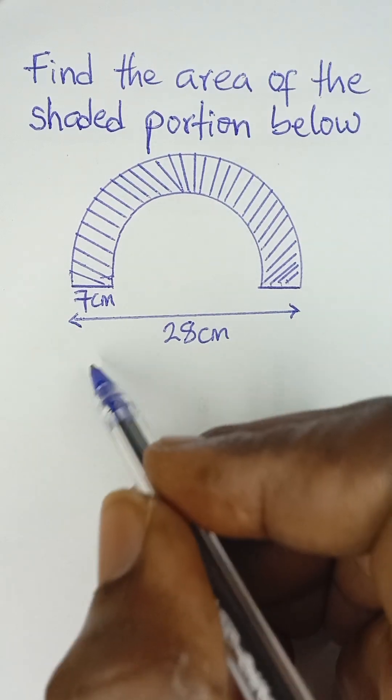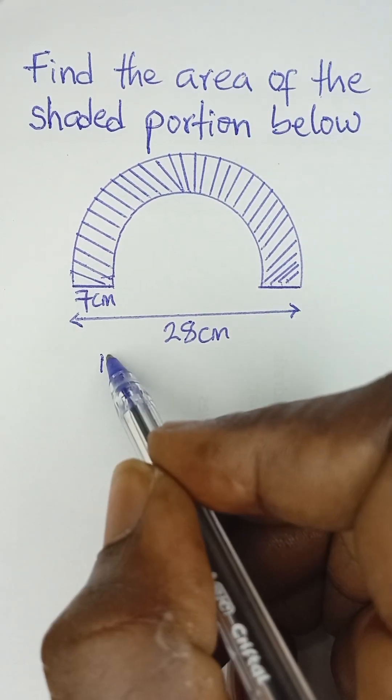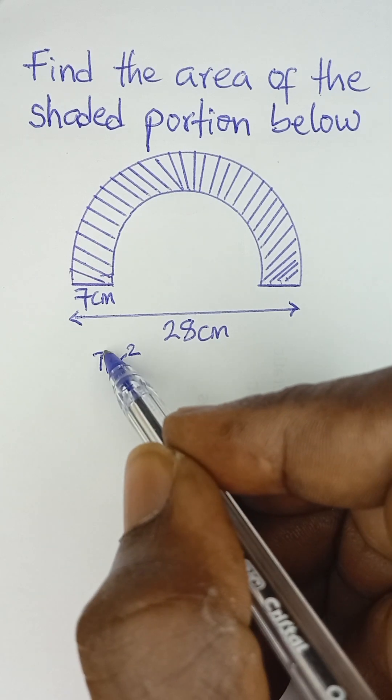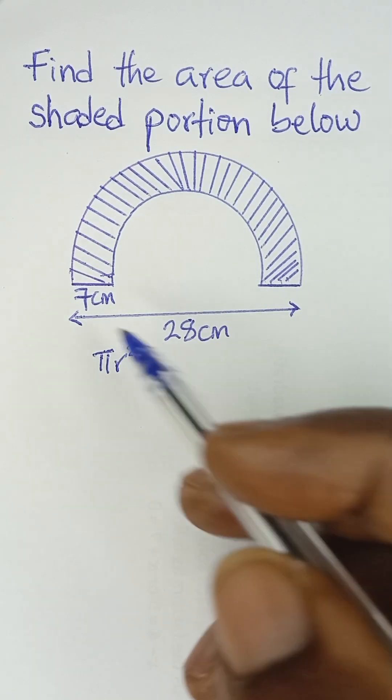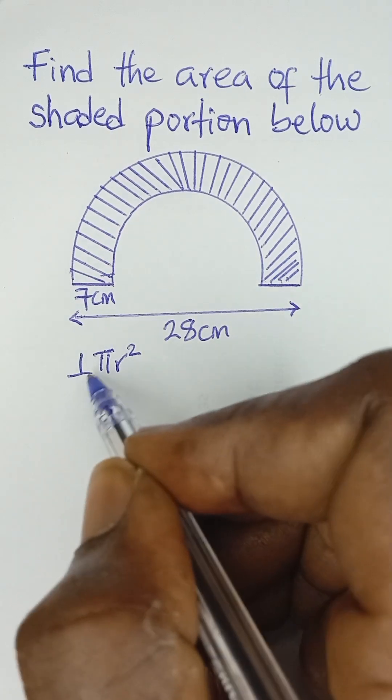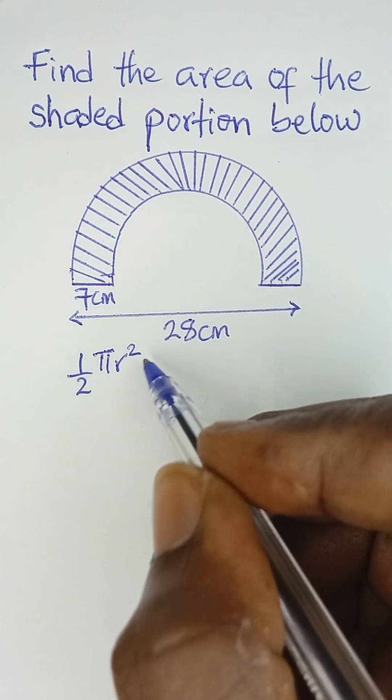The area of a full circle is πr². That is the area of a full circle. Then for a half circle, which is a semi-circle, the area will be half of πr².